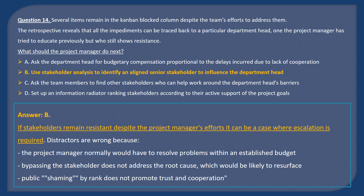Answer B. If stakeholders remain resistant despite the project manager's efforts, it can be a case where escalation is required. Distractors are wrong because the project manager normally would have to resolve problems within an established budget. Bypassing the stakeholder does not address the root cause, which would be likely to resurface. Public shaming by ranking does not promote trust and cooperation.